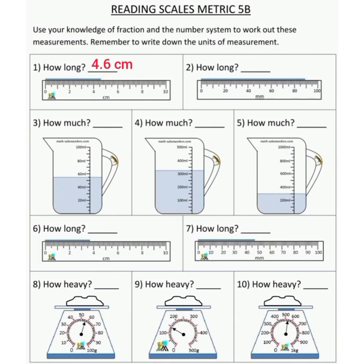Number three asks how much liquid is in the beaker, in milliliters. Looking at number three, you can see it's going past 40 milliliters. Counting by fives: 45, then 50, then 55 — that's where the measurement is at. So the answer for number three is 55 milliliters.